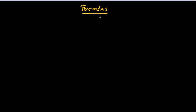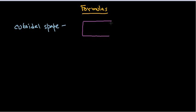There are different geometrical shapes and different formulas for different shapes. Let's begin with the cuboidal shape. Let's draw the shape first for better understanding. A cuboidal shape will look something like this — two rectangular faces joined together. This is a cuboid, this is a cuboidal shape.